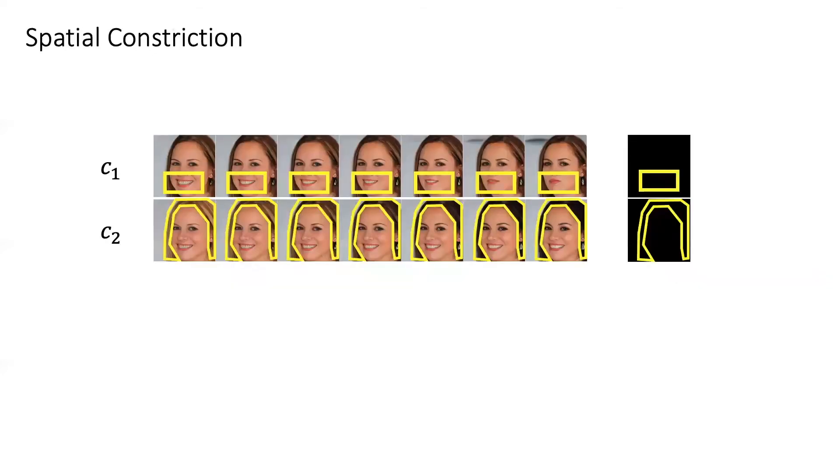Here are two examples of the spatial constriction assumption, where smile and hair color are both localized in some areas. The idea is that we want to constrain the spatial impact of latent code on the image during generation.